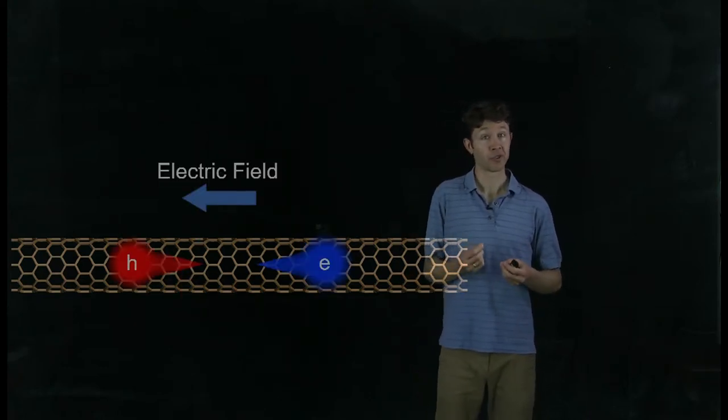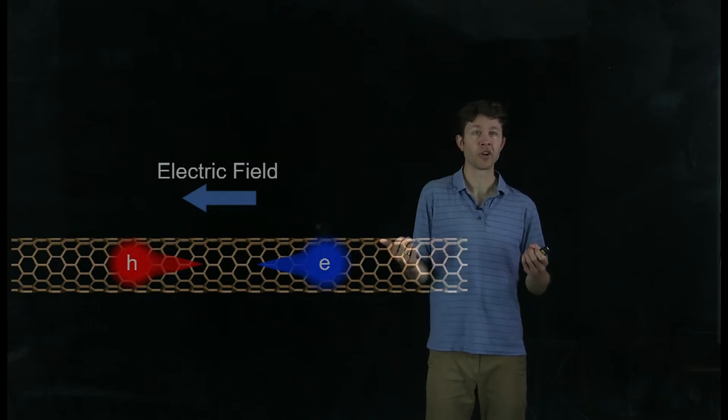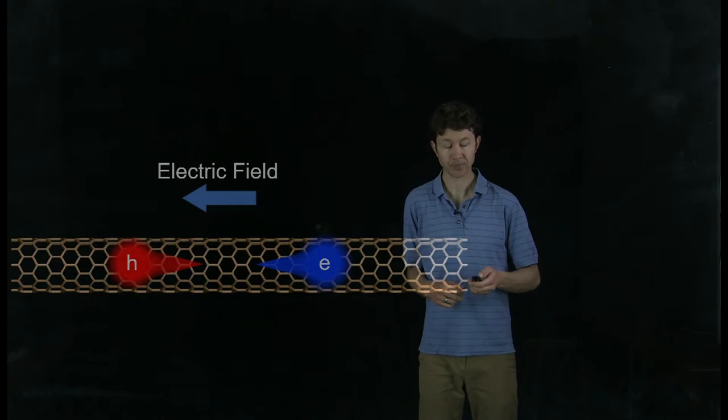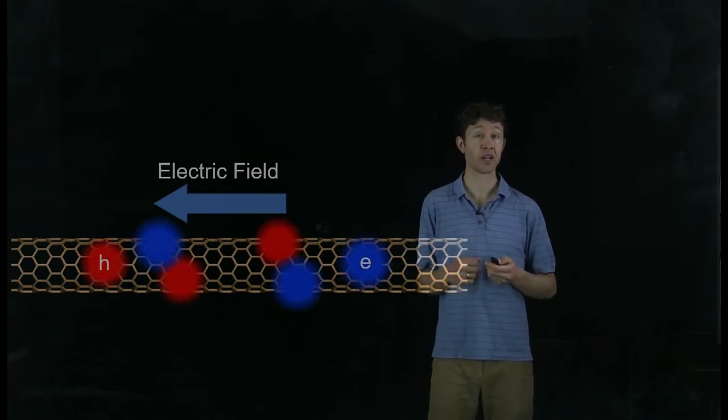In the presence of an electric field, though, the electron and hole could be pulled apart from each other. The negatively charged electron's pulled one way, the hole's pulled the other. And if that electric field is strong enough,